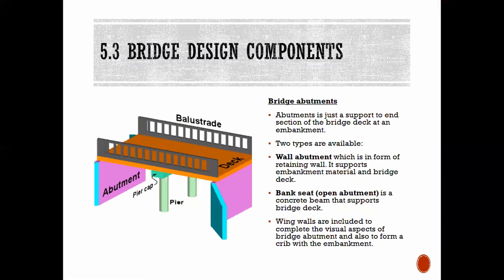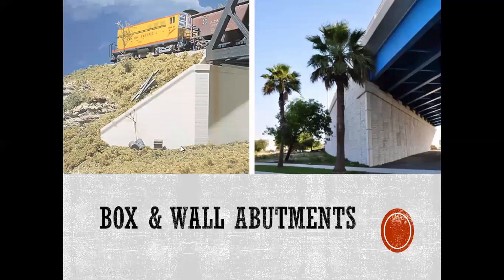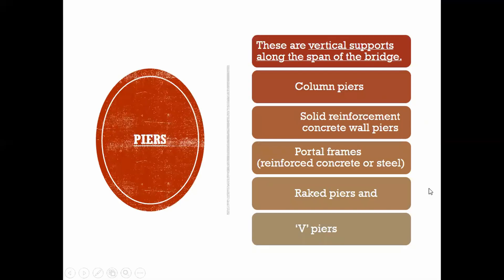After we cover all the types, we go into the components of bridges. There's a nice picture example to follow as you go through this. Bridge abutments are just the support at the end of the bridge deck — a support wall at the end. The two types available are the wall abutment and the bank seat. You can also see your piers, which are basically your columns or supports under the bridge — vertical supports along the span.